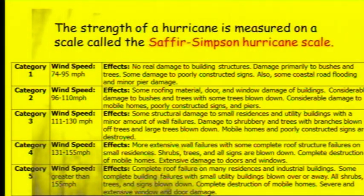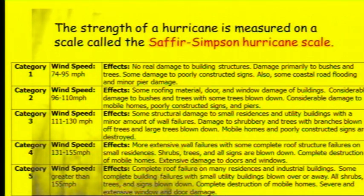The strength of a hurricane is measured on a scale called the Saffir-Simpson Hurricane Scale. In Category 1, the wind speed is quite low at only 74 miles per hour. Moving through to Category 5, we can see that the wind speed picks up to 155 miles per hour, and the damage therefore gets a lot worse in Category 5.